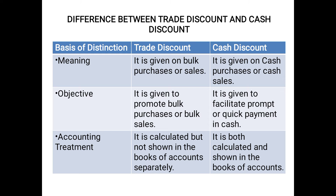Moving ahead, here are the differences between trade discount and cash discount. The first basis is meaning: trade discount is given on bulk purchases or sales — the objective is to promote bulk purchase or sales in large quantity. Whereas cash discount is given on cash purchases or sales, not on credit transactions.